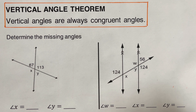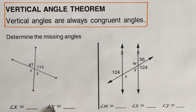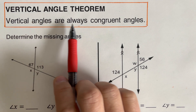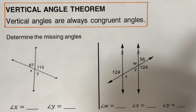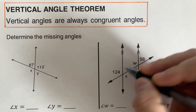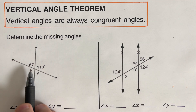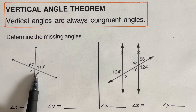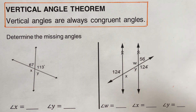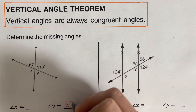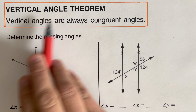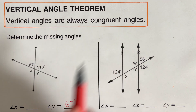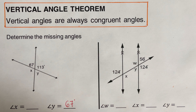Let's take this first example where we need to solve for angle x and angle y. Remember that vertical angles are always congruent. Looking at the picture, we have 67 degrees on one side, and the angle across from it is y — so angle y is also 67 degrees, because they are vertical angles. For angle x, since x and 113 degrees are vertical angles, angle x is also 113 degrees.